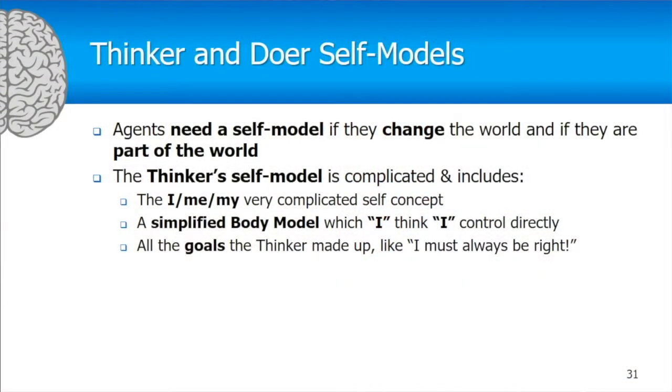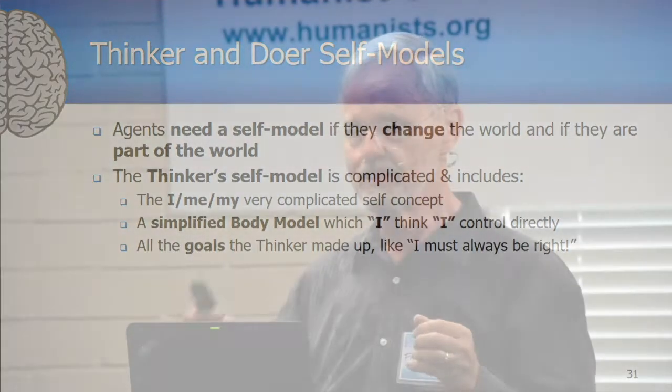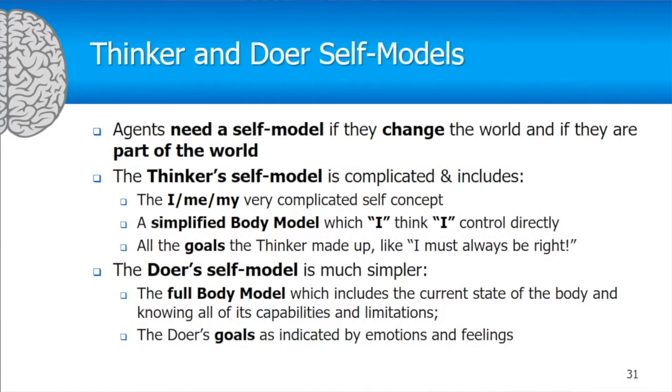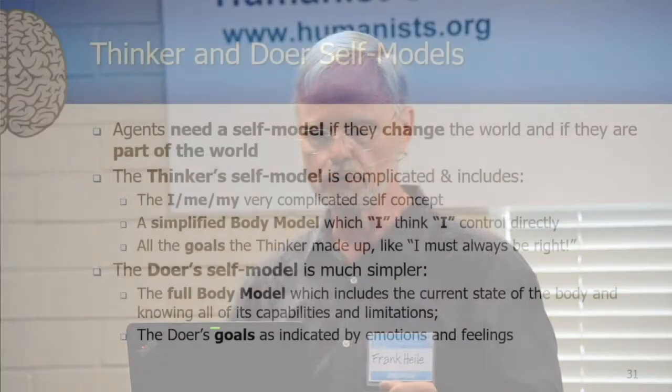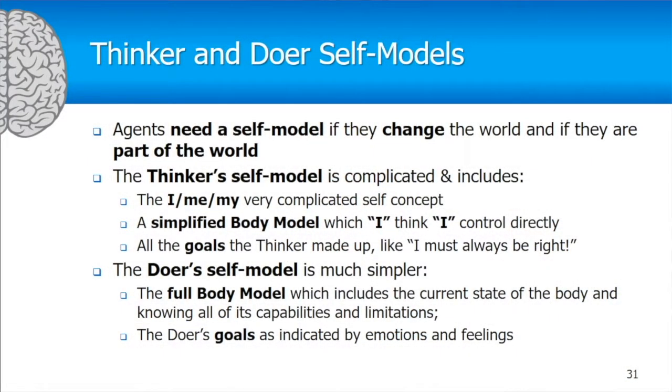The thinker also has goals it made up, such as 'I must always be right.' The doer's self-model is much simpler — it's essentially the full body model. It's the model of the entire body, of what it's capable of, and it knows how to operate that body to achieve whatever goal it wants to achieve. The doer's goals are indicated by emotions and feelings.